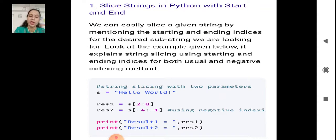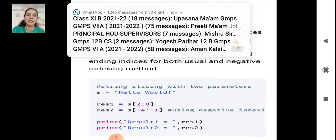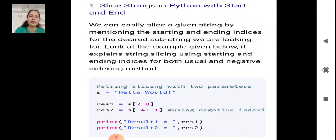Here we are slicing from minus 4 and we stop it at minus 1. So print the result: print res1 and print res2.